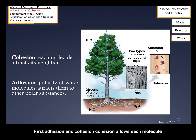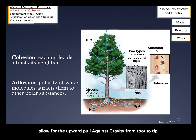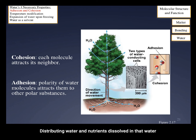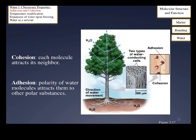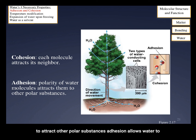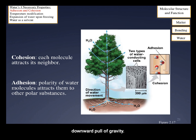First, adhesion and cohesion. Cohesion allows each molecule of water to attract neighboring molecules of water. This can allow for the upward pull against gravity from root to tip, distributing water and nutrients dissolved in that water throughout a living organism such as a tree. Adhesion is the property of water that allows water molecules to attract other polar substances. Adhesion allows water to hydrogen bond to cell walls, which again helps counter the downward pull of gravity.